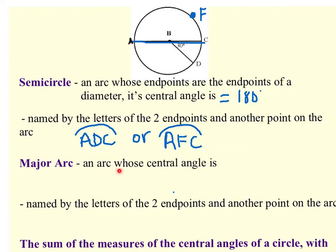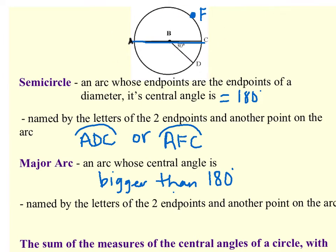A major arc is an arc whose central angle is bigger than 180 degrees. A minor arc has to be smaller than 180 degrees, so it has to be smaller than a semicircle. A major arc has to be bigger than a semicircle, bigger than 180 degrees. When we name a major arc, you have to use three letters — the letters of the two endpoints and another point on the arc. For example, arc DCA is a major arc because you start at D, go through point C, and all the way around to A. That's bigger than a semicircle, so it's considered a major arc. Using the points already on that circle, that's really the only major arc we see.